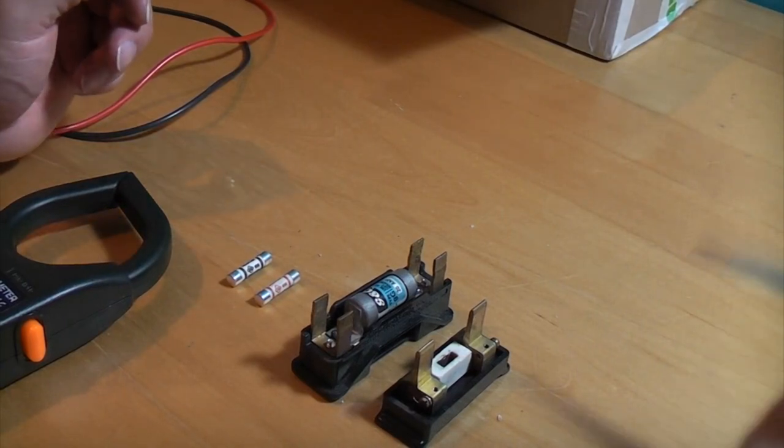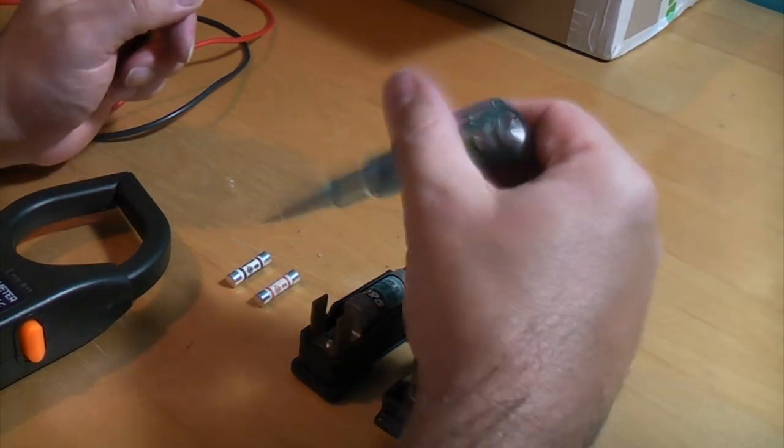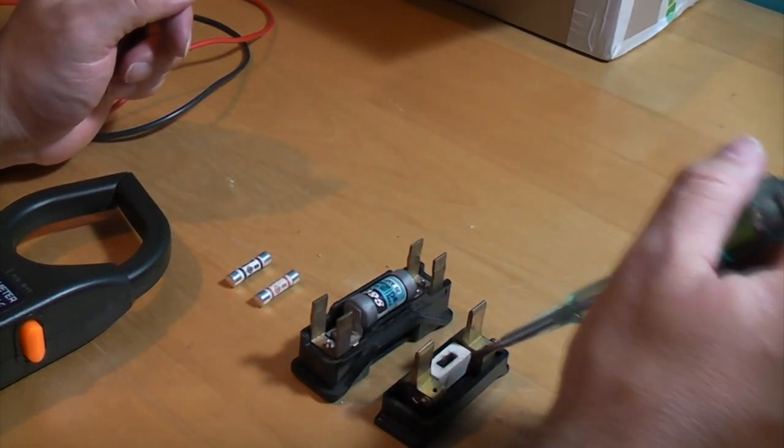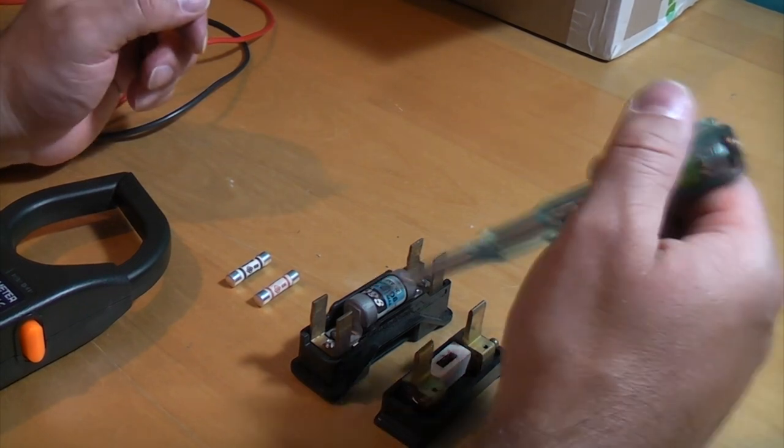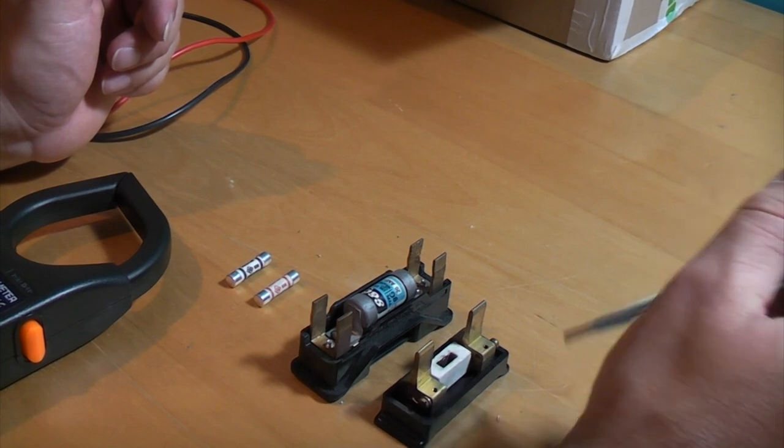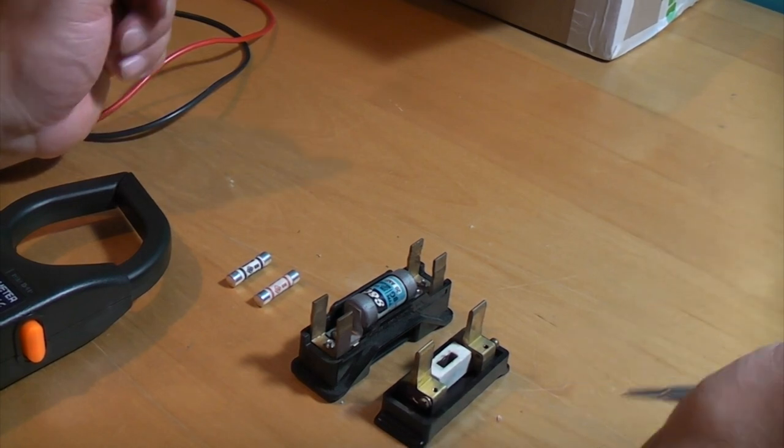I'm going to show you how to test a few different types of fuses now. They all work on the same principle basically, and it's a deliberate weak link in a circuit. If something does go wrong with that circuit, the fuse will burn out rather than causing damage to the circuit that it's protecting, hopefully.